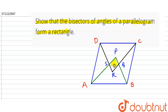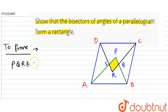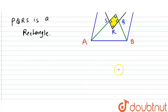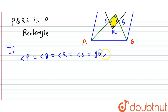Suppose the intersection points are P, Q, R, and S. So we have to show that this region PQRS is a rectangle. We have to prove that PQRS is a rectangle. We can do this if we are able to prove that all four angles — angle P, angle Q, angle R, and angle S — are each equal to 90 degrees.